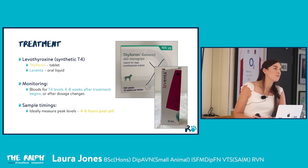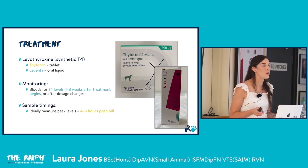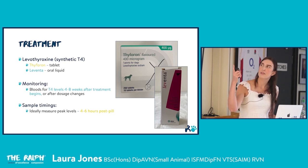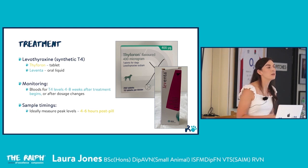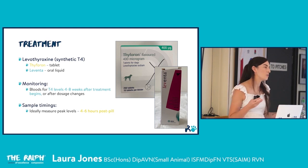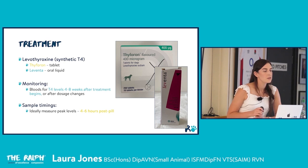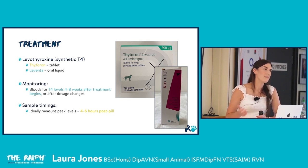Treatment is straightforward — replace the thyroid hormone the patient can no longer make by giving synthetic T4, levothyroxine, available as tablet or liquid (Thyforin or Leventa). Find the most practical formulation for the individual patient to ensure reliable administration at home. Reassess with bloods to recheck T4 levels within four to eight weeks of starting treatment and after any dose change. Ideally measure peak T4 levels approximately four to six hours after medication is given — so always confirm exactly when the patient had their medication before booking blood appointment timing.